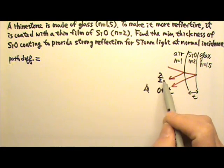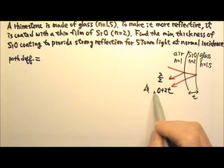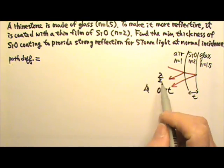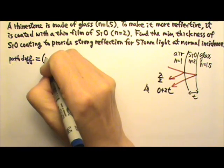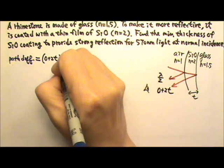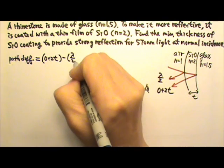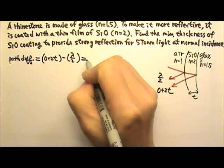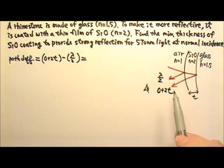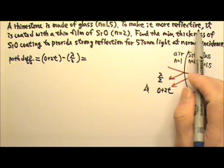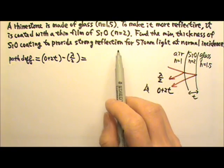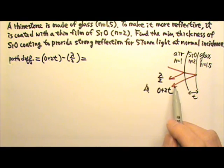So the path difference here, I'm going to use the 2T term minus the other one. So it's 0 plus 2T minus the half-lambda is going to equal to, let's see, because we want to have more reflection, we want a strong reflection, that means we want these two to give us constructive interference.